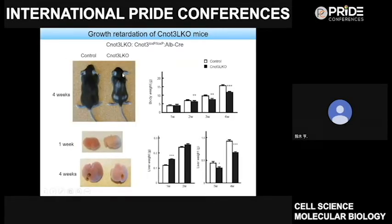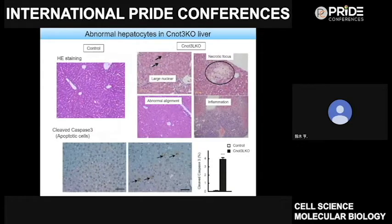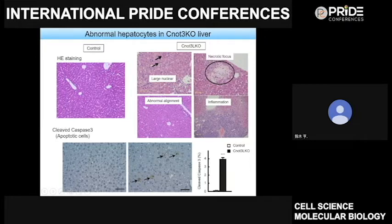Liver-specific CNOT3 knockout mice are born, and both male and female become adult and are fertile. However, liver-specific CNOT3 knockout mice are universally small compared to control mice, and the liver itself is also small. Hematoxylin and eosin staining of liver reveals abnormal morphology of hepatocytes and dysregulated alignment of hepatocytes. Furthermore, we detected necrosis, increased inflammation, and apoptosis. These results suggest that liver does not precisely develop in the absence of CNOT3.